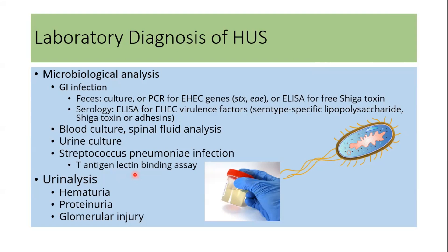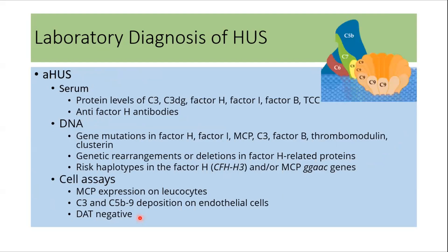Urine analysis may show hematuria, proteinuria, and features of glomerular injury. In atypical HUS, serum can be tested for protein levels of C3, C3d, Factor H, Factor I, Factor B, and for anti-Factor H antibodies. DNA analysis can be done to look for mutations in Factor H, Factor I, C3, and Factor B. Cell assays can be done to look for MCP expression on leukocytes, C3 and C5b-9 deposition on endothelial cells, and Coombs test can also be done.